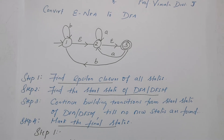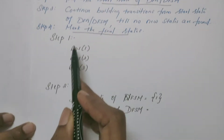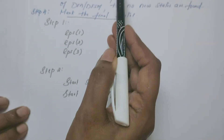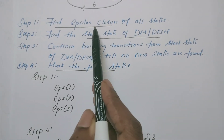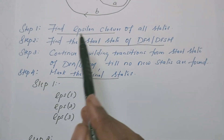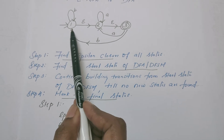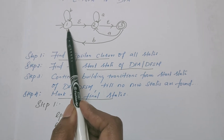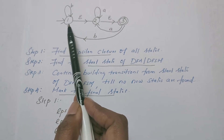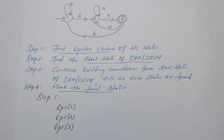Let us begin with Step 1: find the Epsilon closure of all states. First, we need to know what Epsilon closure means. From a given state, we find all states that are reachable only on Epsilon transitions.